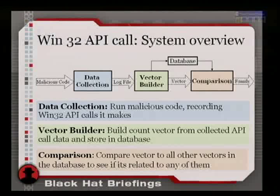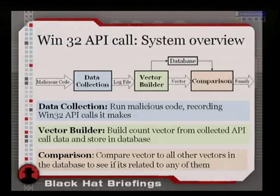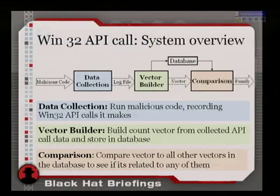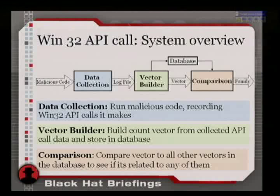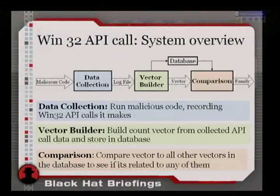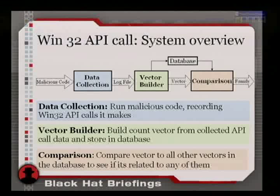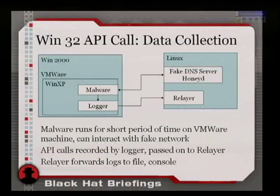High-level overview: data collectors built a vector from the API calls, we dumped them to the database, used a comparison function, and then assigned the sample to a family. The goal was classification of malware we knew was malware, but didn't know which family it belonged to — we wanted to see whether we could classify it using only the API calls.